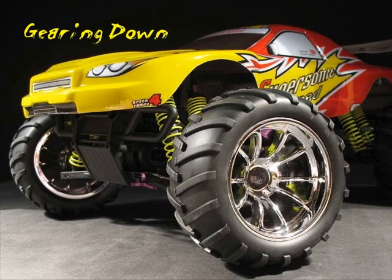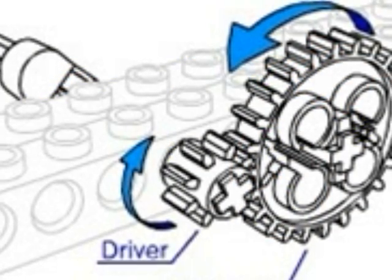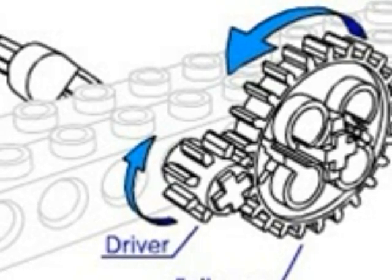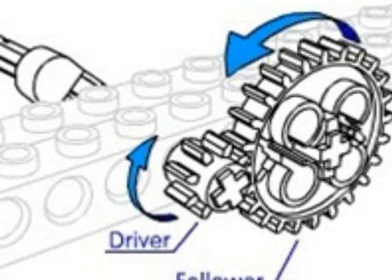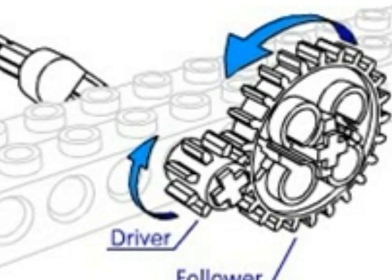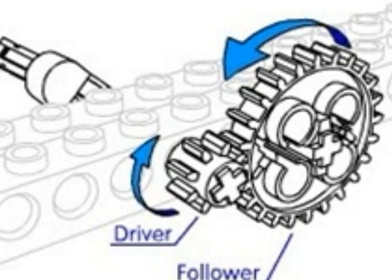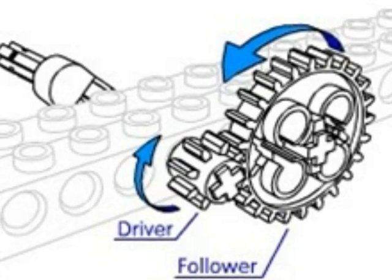If instead of speed, we're looking to increase the amount of torque that our motor is producing, then we want to gear down. In this picture, our drive gear is now an 8-tooth gear, and our follower is a 24-tooth gear. This means that for every rotation our drive gear makes, our follower will only move one-third of a rotation. Our gear ratio is now 1-to-3. Okay, you can see it's moving more slowly, so what else? What's the use of this?